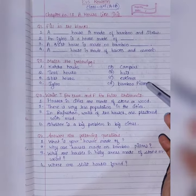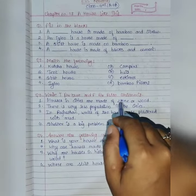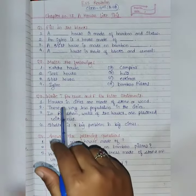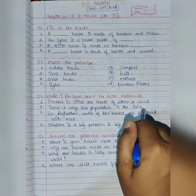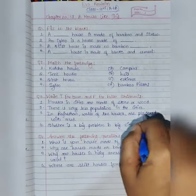First, houses in cities are made up of stones or wood. Second, there is very less population in the cities. Third, in Rajasthan, walls of houses are plastered with mud.